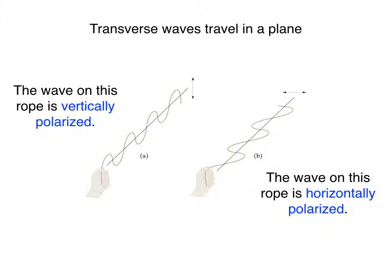Now imagine holding the same rope in your hand but this time you move your hand left and right horizontally. Now as the waves move along the rope, each particle of the rope moves left and right from side to side horizontally as waves pass. The entire rope is all within one plane and that plane is oriented horizontally. We say that the wave you are generating is horizontally polarized.